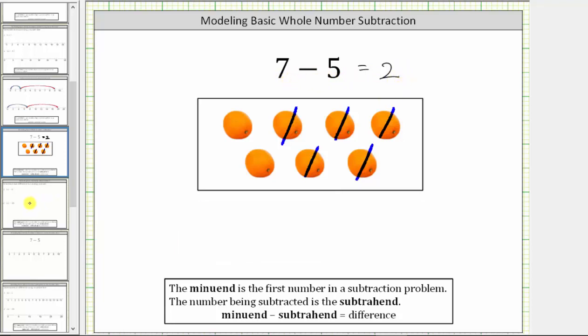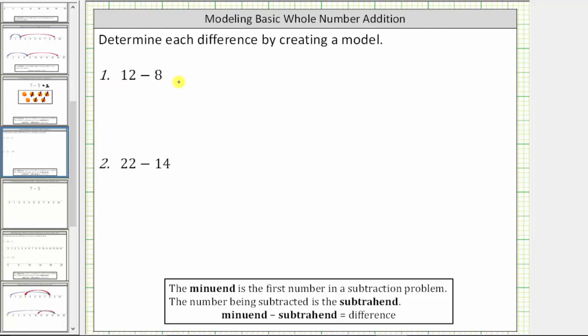Let's look at some more examples. Here we have 12 minus 8. We begin by modeling the minuend, or in this case, 12. Let's use 12 small circles. And to keep things organized, it is helpful to have the same number of objects in each column. So for 12, let's make columns with 4 small circles.